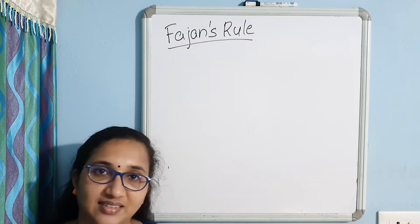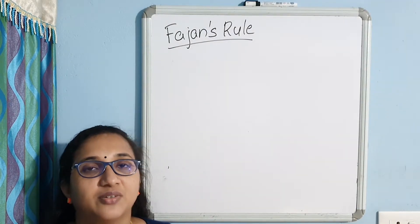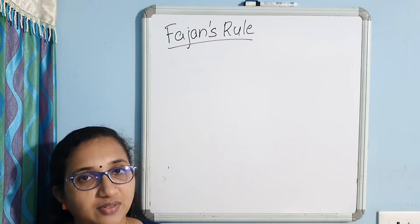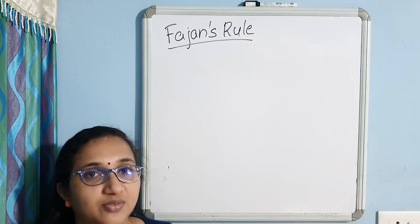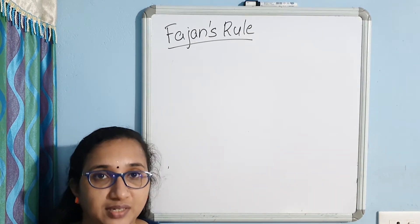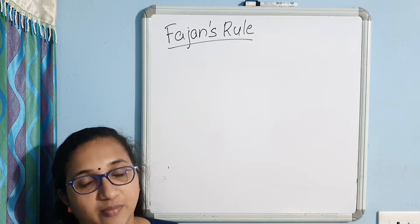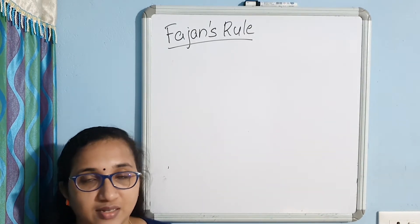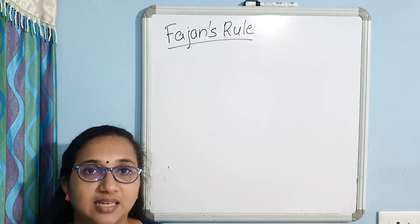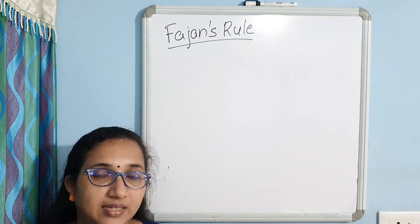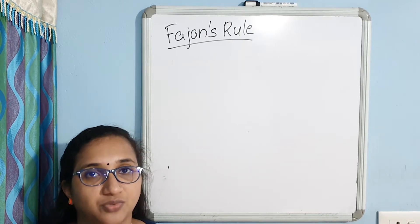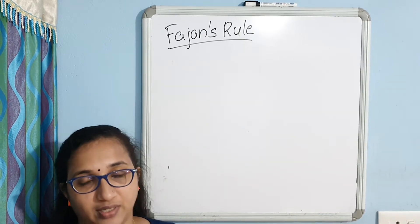Hi everyone, today we are going to discuss about Fajan's Rule. Fajan's Rule is an important concept in chemical bonding because it details the partial covalent character of ionic bonding.